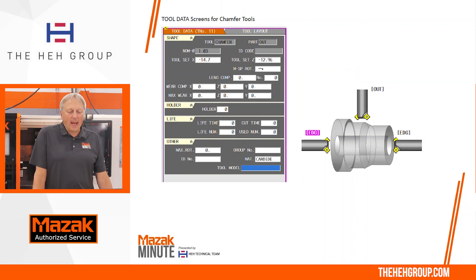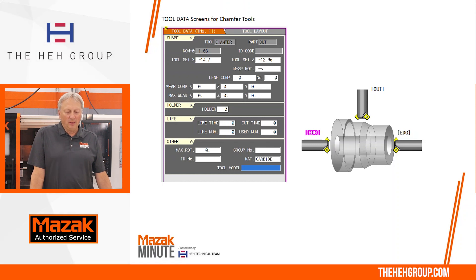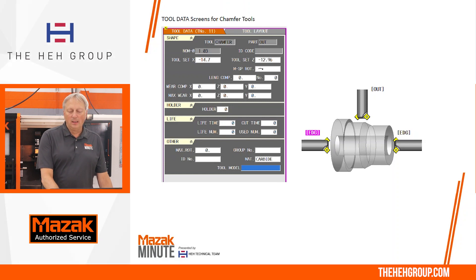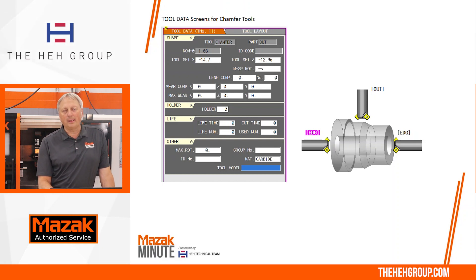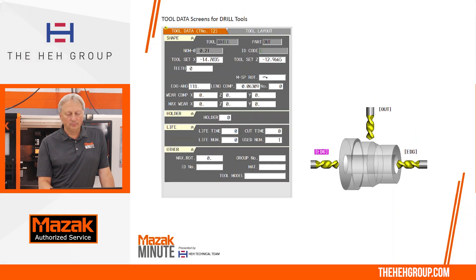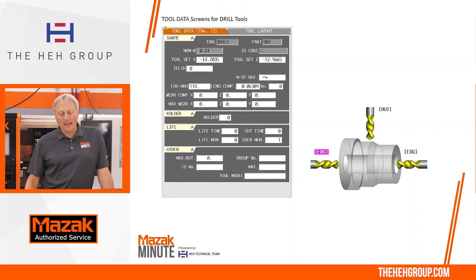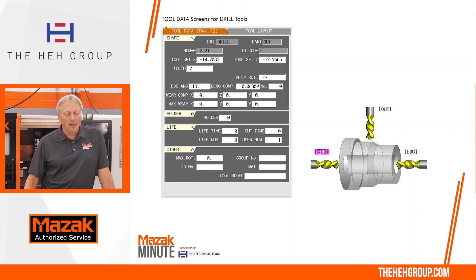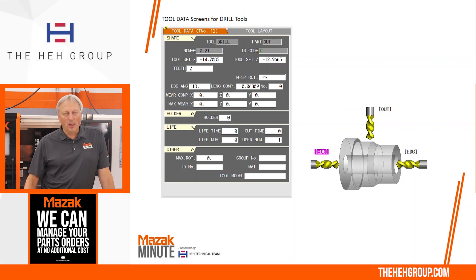For chamfer tools, the nominal diameter of the tool is the largest size of the chamfer. You also have the tool set position, the mill spindle rotation, and the tool life. On the right side, the edge is for the main spindle, out for the outside diameter, and the magenta edge is for the second spindle. Just like the end mill you have mill spindle rotation, plus an added item: edge angle, which is the included angle of the tip of the tool. Once you type in that angle, the length comp gets calculated out automatically.